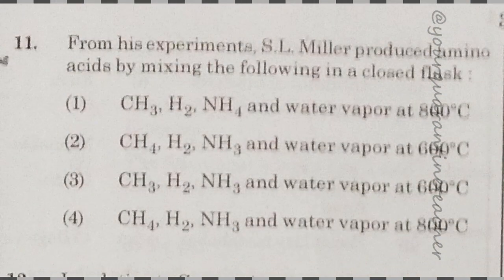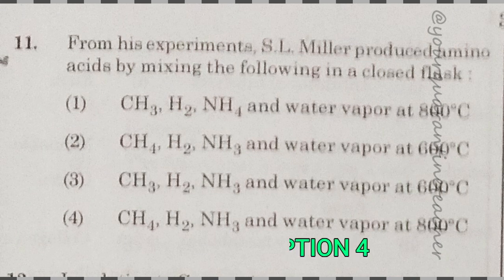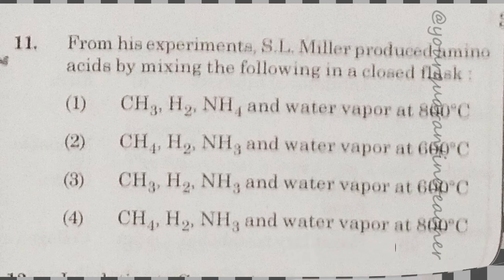11th question: from his experiments, S.L. Miller produced amino acids by mixing the following in a closed flask — this is from the evolution chapter. The answer is option 4: methane, hydrogen, ammonia and water vapor at 800 degrees Celsius.